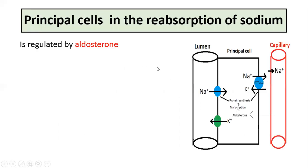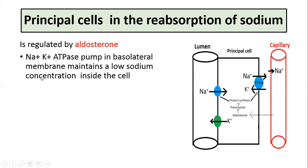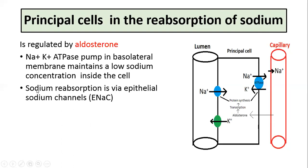In the principal cells, sodium reabsorption is regulated by aldosterone, so the rate of reabsorption of sodium is controlled by aldosterone. The sodium-potassium ATPase present on the basolateral membrane maintains a low sodium concentration inside the cell, and sodium reabsorption is via sodium channels called ENaC channels, also called epithelial sodium channels.